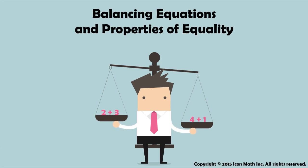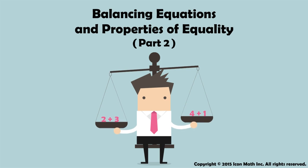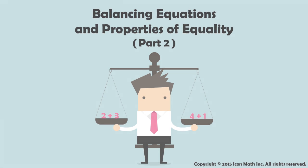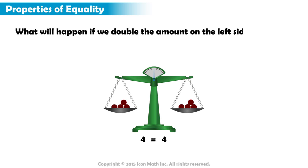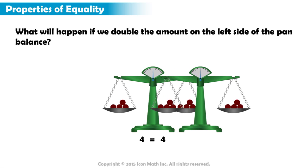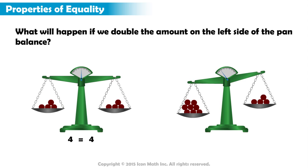Balancing Equations and Properties of Equality. What do you think will happen if we double the amount on the left side of the pan balance? Oh no! The pan balance is no longer level!